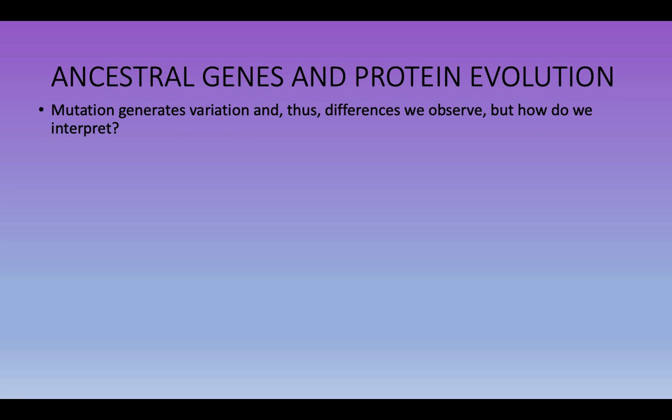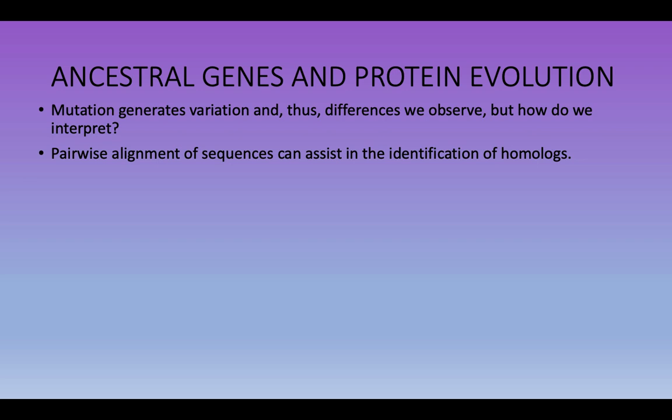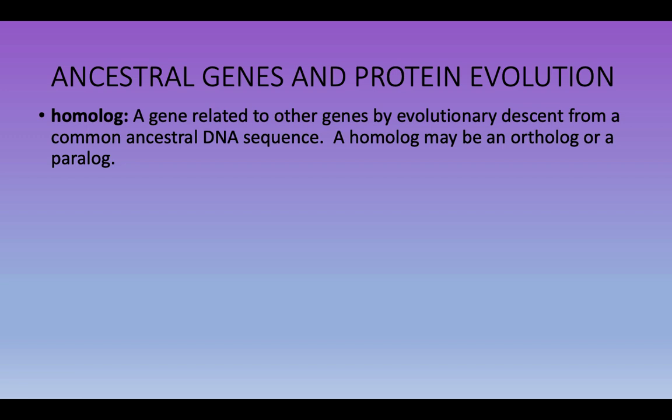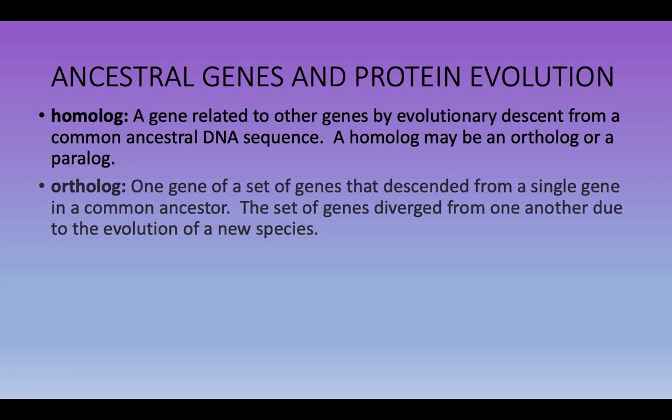One important thing to understand is that mutation generates genetic variation and all of the differences we observe. But how do we interpret and examine those differences? One main way is through pairwise alignment of sequences — we look at where sequences are the same and where they differ. We are particularly interested in whether they can help us better understand homologues and the nature of their similarities and differences. Homologues, from a genetic standpoint, are genes related to other genes through evolutionary descent from a common ancestor. There are two types: orthologues — genes descending from a single gene in a common ancestor, typically diverged due to speciation — and paralogues — genes that underwent a duplication event within a common ancestor, diverged within a species due to duplication.